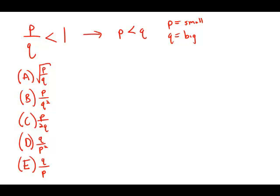If we take a square root of something less than 1, it's still less than 1. So answer A is out. If we make the denominator bigger, as we're doing in answer choices B and C, you make the denominator bigger, the fraction gets smaller. So it's still going to be less than 1.